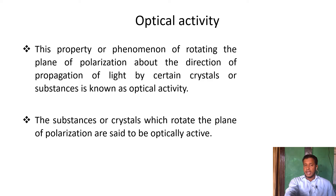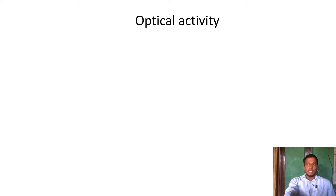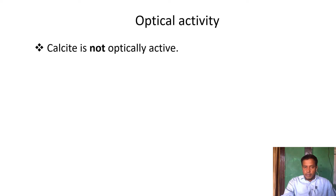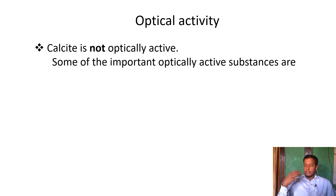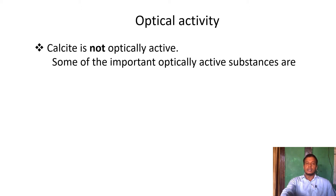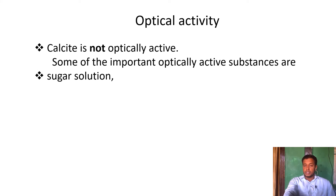Examples of optically active crystals include quartz, which can rotate the plane of polarization. Calcite, however, is not optically active — it cannot rotate polarized light. Not only crystals, but solutions can also be optically active. Sugar solutions, for example, can rotate the plane of polarization.